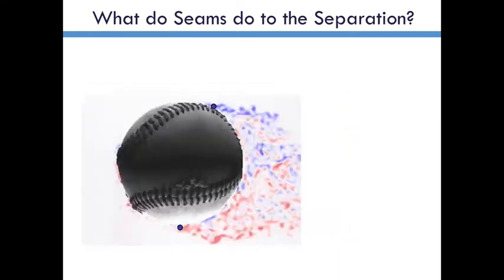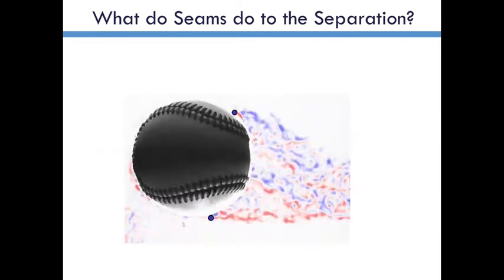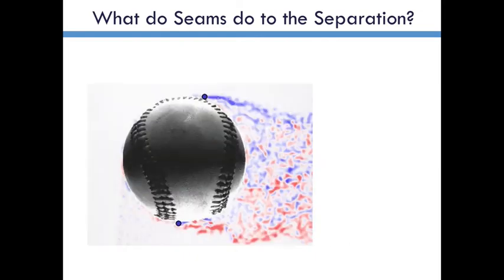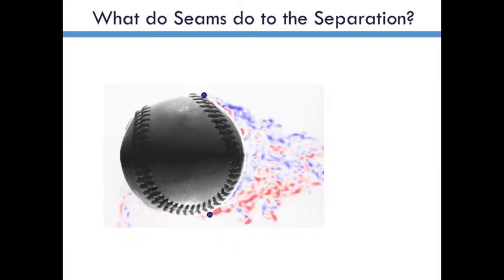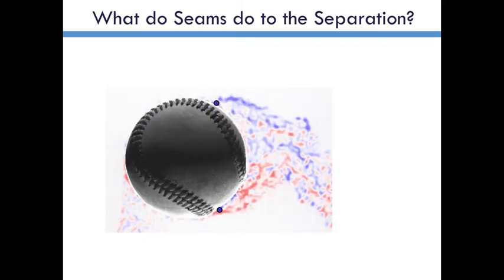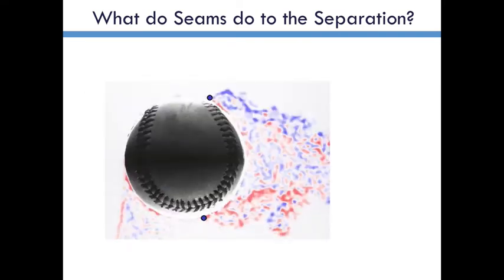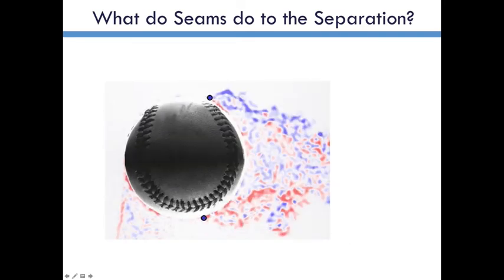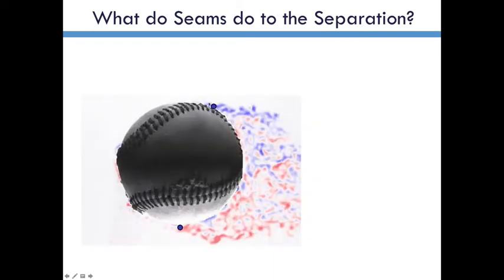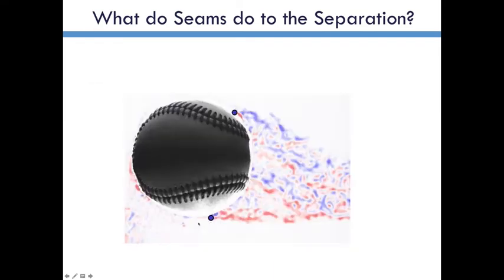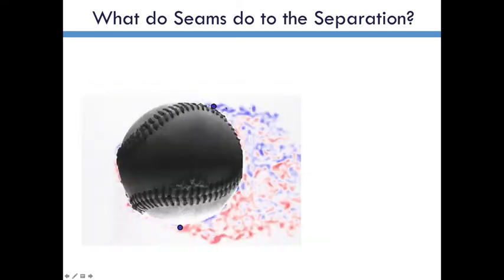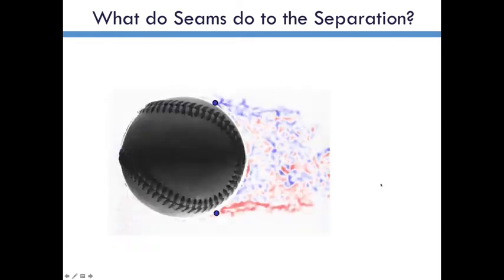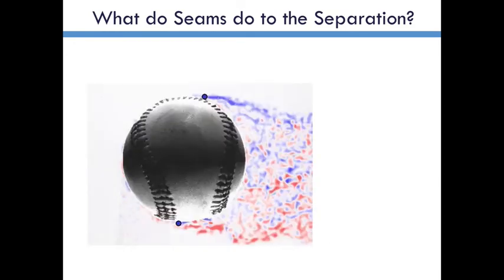So what do the seams do to the separation? This is an example of what I was just saying. This is some very old data that we took almost a year and a half ago and this is a high school baseball. The ball is spinning and we're taking a snapshot of it as it goes by and we're starting the ball in different orientations so that we can put together this full rotation. What I noticed when I first looked at this was that the separation point, which we've shown with this blue dot here, moves around as a result of the seams. When the seams come by it seems to drag it along with it a little bit. That was the first thing we noticed.